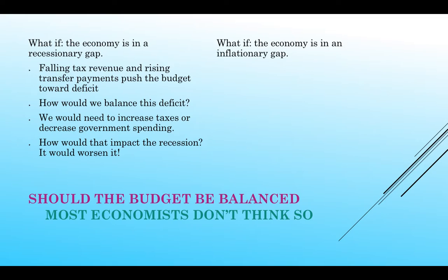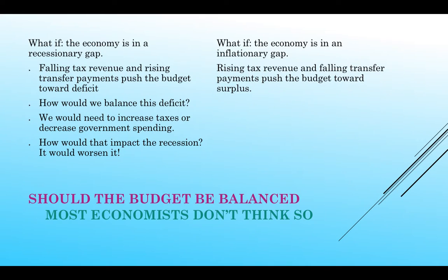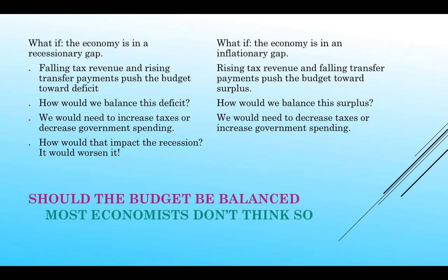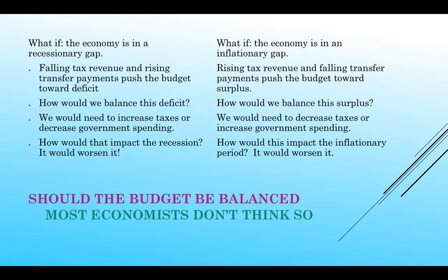During an inflationary gap, tax revenues are going up and transfer payments are going down, so the budget is moving towards a surplus. How would we balance the surplus? We'd decrease taxes and increase government spending — but that would make the inflationary gap worse. A lot of people say in times of a recession, that's when you spend to get out of the recession, then the government can back off. Obviously, this is not what happens all the time — macroeconomics often doesn't find its way into policy.